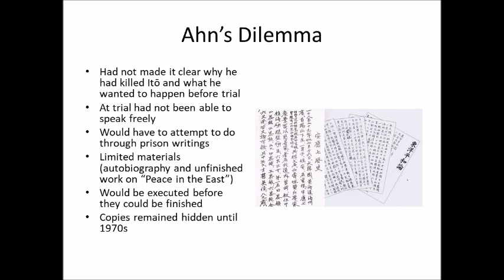What Ahn had to do then was make his ideas clear through what he wrote in prison. In prison he wrote two major documents: an autobiography, which he finished, and his work on peace in the East, which he was unable to finish because he would be executed before completing it. We are fortunate that copies did exist and were not destroyed — they were discovered in the 1970s, giving us material to better understand Ahn Chungun's ideas.